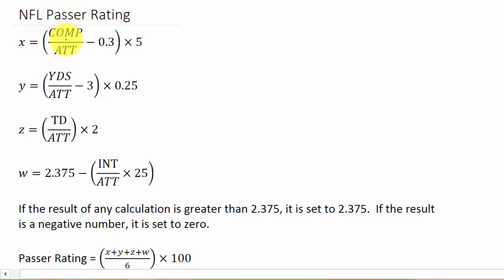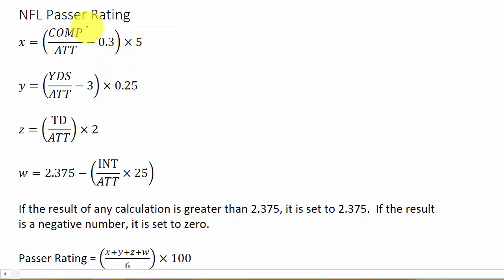First, we calculate X, which is the number of completions over attempts. You subtract completions over attempts minus 0.3, and then multiply that times 5. That's how you calculate the X value - this represents the completion percentage part of the passer rating.